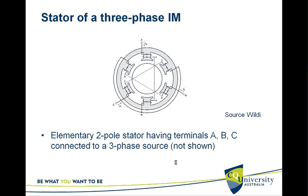This is a very basic elementary two-pole stator having terminals A, B, C connected to a three-phase source — those are the supply terminals. The same winding is found across the opposite poles, around the opposite poles.